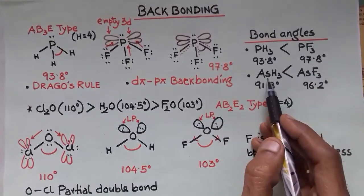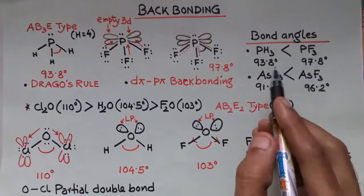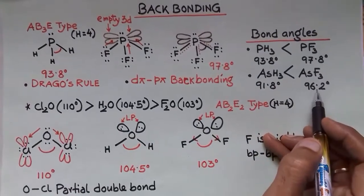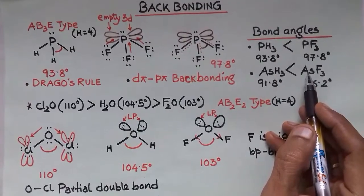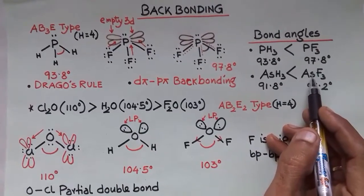It is also applicable for arsenic hydride and AsF3. Arsenic has vacant 4d orbitals and d pi-pi backbonding is possible.